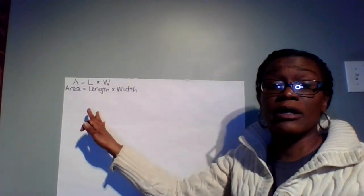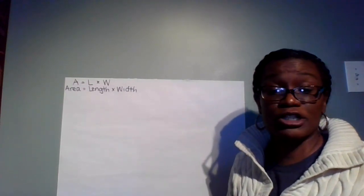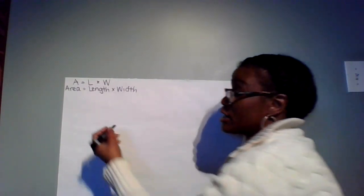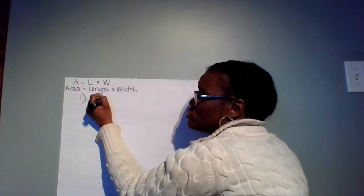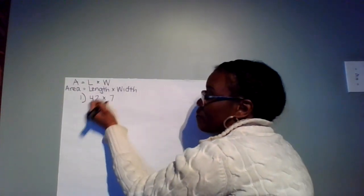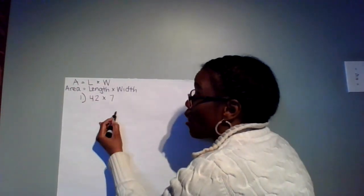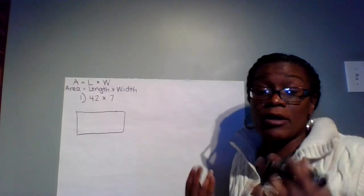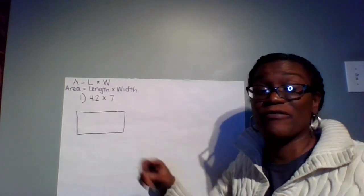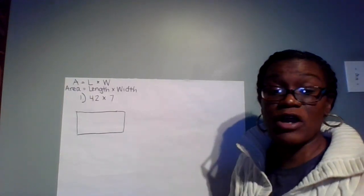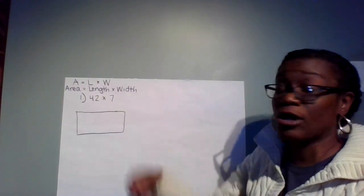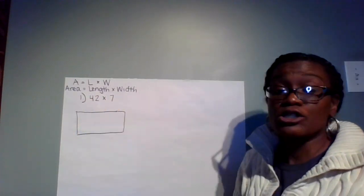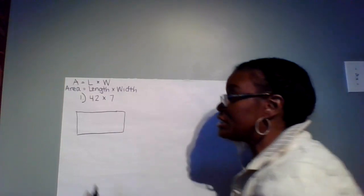We're going to use this formula to help us multiply numbers up to a four-digit number times one. I'm going to start with a two-digit number times a one-digit number. Our equation for number one is going to be 42 times 7. The first thing you need to do is draw a rectangular box — it doesn't have to be perfect, our calculation does. Now, count how many numbers you have total: one, two, three — so I'm only going to need two boxes.